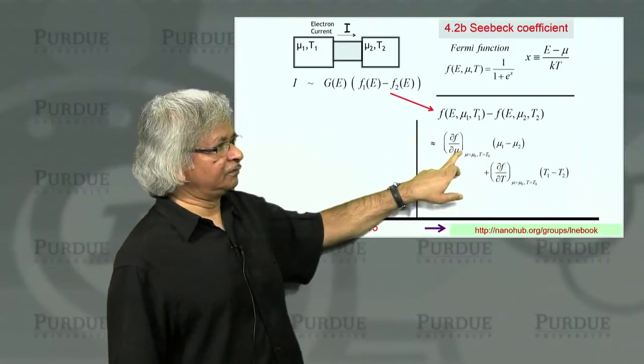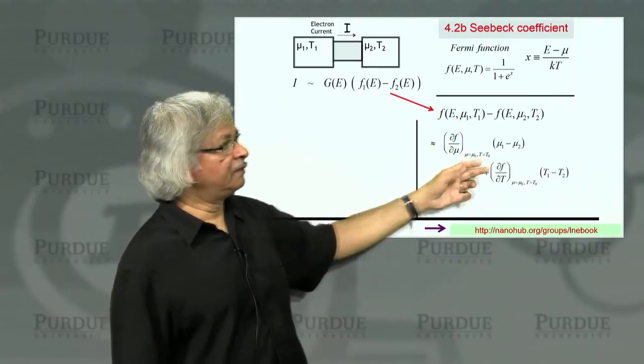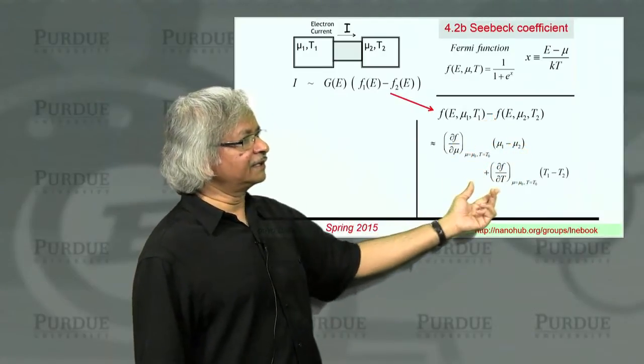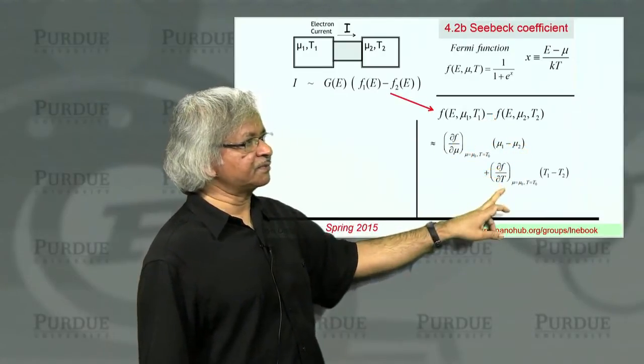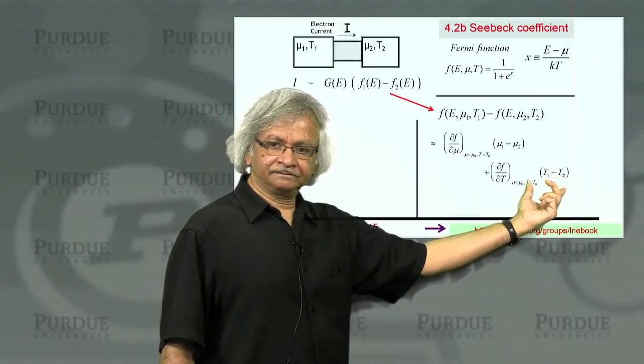So when you write F1 minus F2, it is like F for mu1 T1 minus F for mu2 T2. And you could do this Taylor series expansion, but now you will have two terms. One, what we had before, that is, you take the derivative of F with respect to mu, multiply by the delta mu. But then you will have another term, which is the derivative of F with respect to temperature multiplied by the delta temperature.